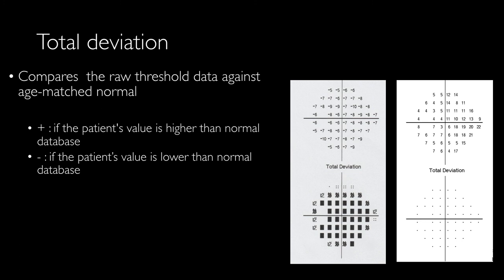The values in the total deviation are reported in negative or positive. When it's lower than the normal database, it will be reported in negative numbers. When it's higher than the normal database, it's reported in positive value.